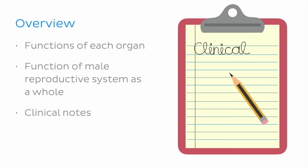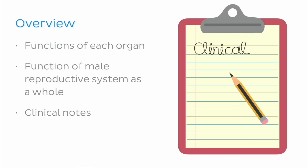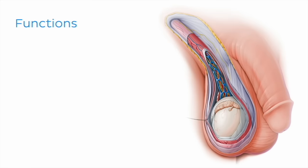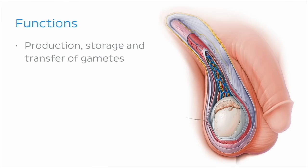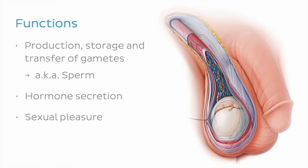Before we dive straight in, let's take a quick look at the main functions of the male reproductive system. As a whole, the male reproductive system has multiple functions, including the production, storage and transfer of gametes, otherwise known as sperm, along with hormone secretion and sexual pleasure.